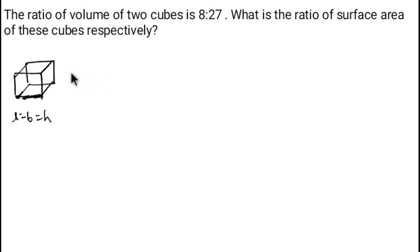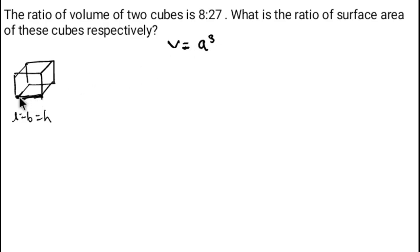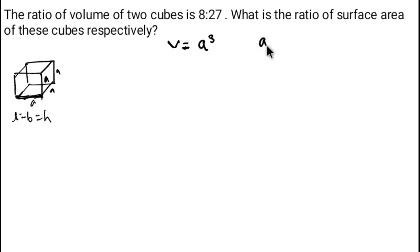What is the volume of a cube? The volume of a cube is side cubed — that is, a³ — since all sides are equal to a.